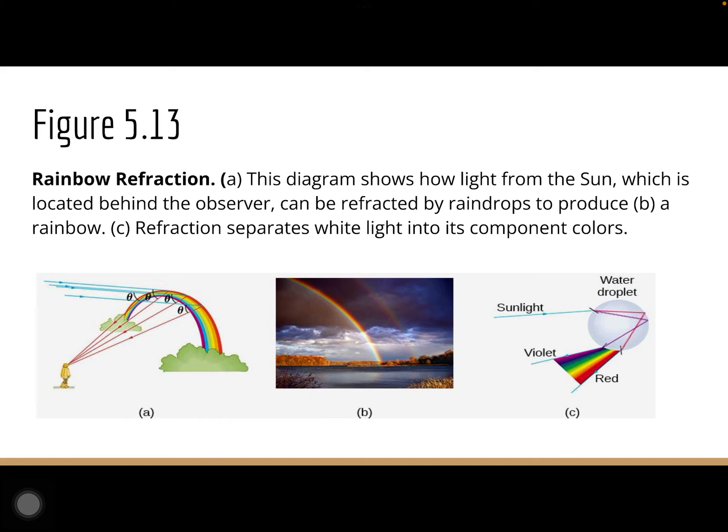We'll also talk about rainbows tomorrow. The diagram shows how light from the sun, located behind the observer, can be refracted by raindrops to produce a rainbow. Refraction separates the white light into its composite colors. When we see a rainbow — whether from rain or a hose — we're seeing light rays from the sun being refracted. If you stand at the correct angle with the sun behind you, you'll be able to view a rainbow. It's not a physical thing; it's just light being reflected and refracted off raindrops.